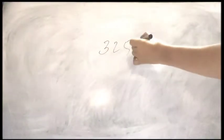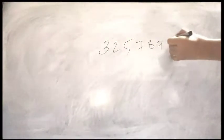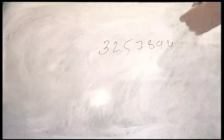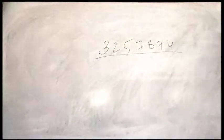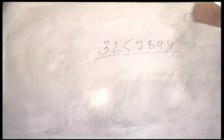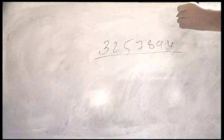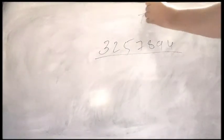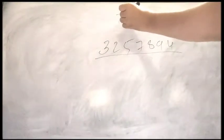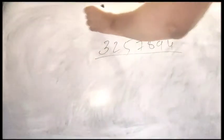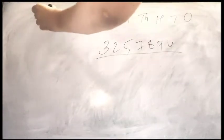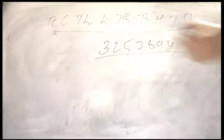Now if I talk about a number of 4, 5, 6, or 7 or more digits — like if I write 3, 2, 5, 7, 8, 9, 4 — how can you read this number? According to the Indian number system it has ones, tens, hundreds, thousands, ten thousands, lakhs, ten lakhs, crores and ten crores. This is the way we read the number.